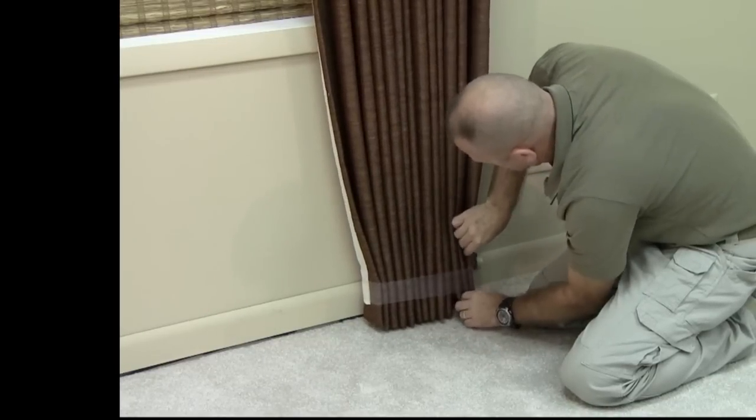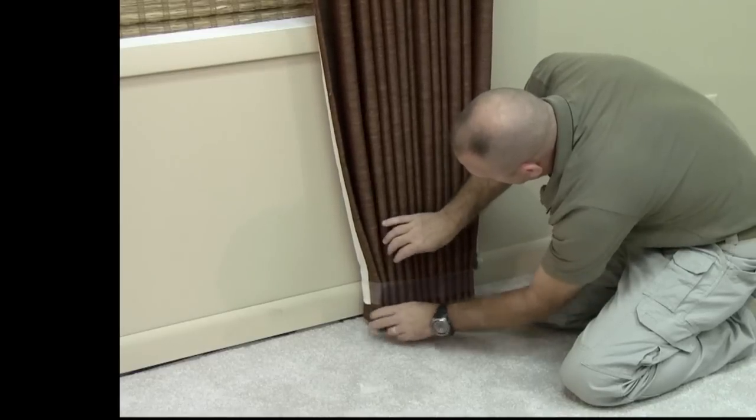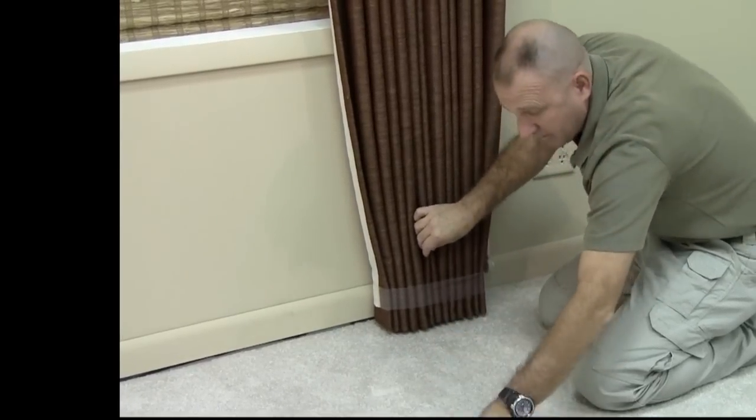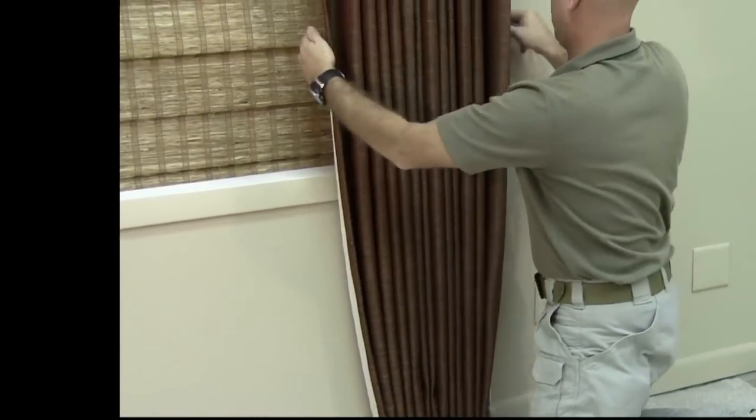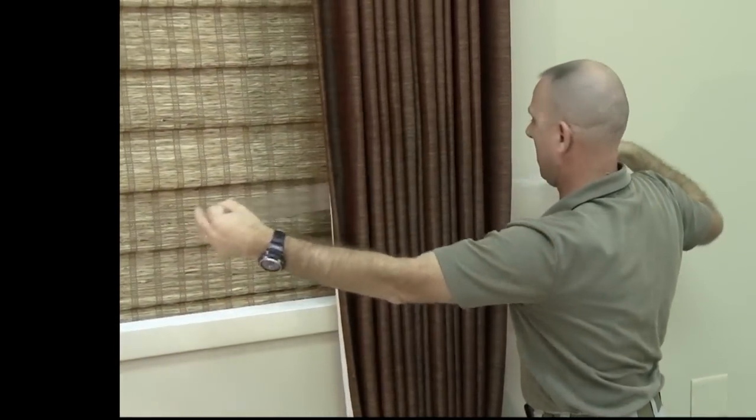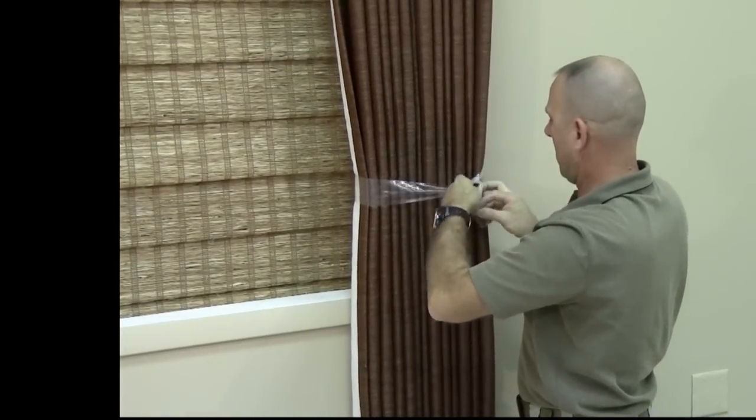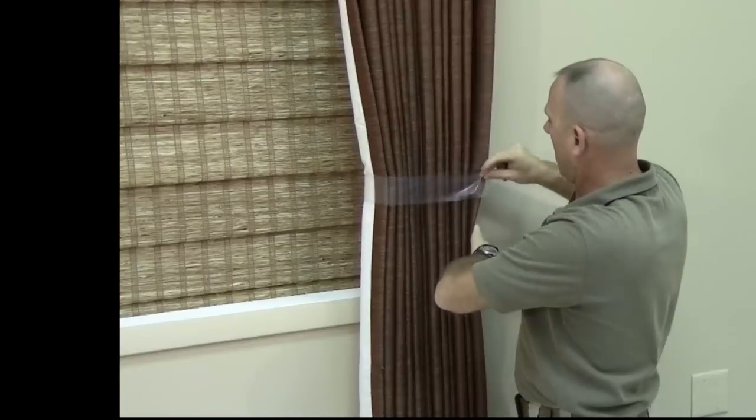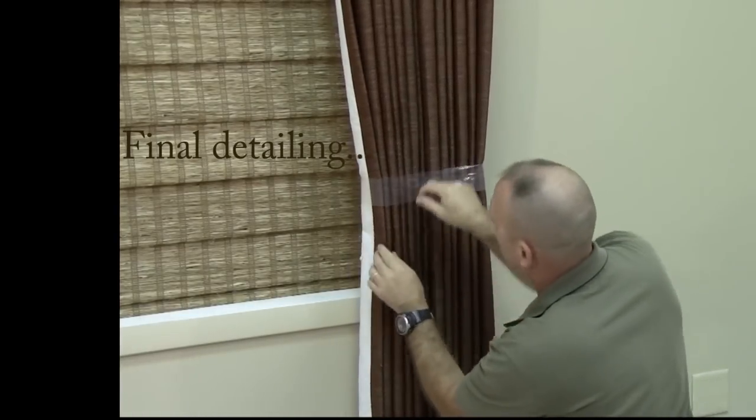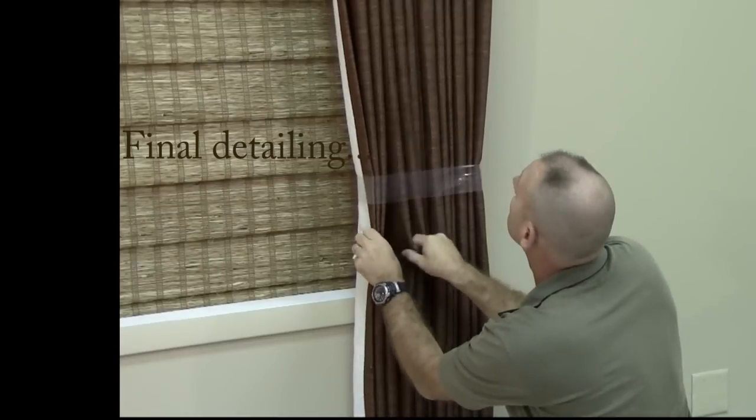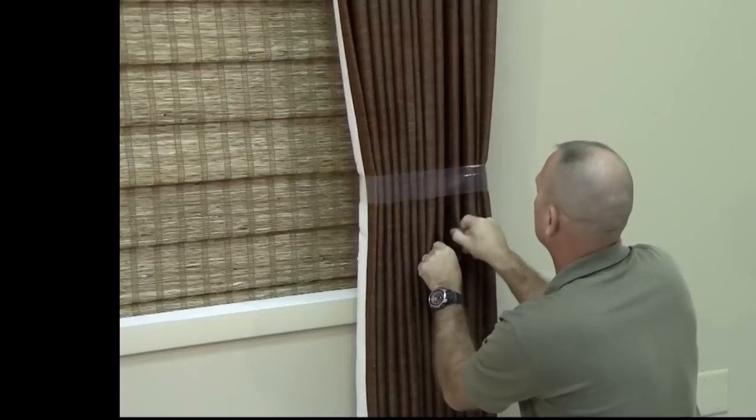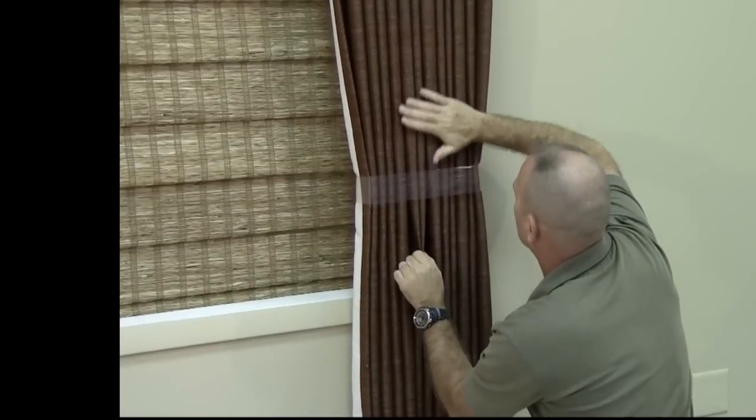As you are banding, take care to keep the folds equal and level with each other. Position the bands at the bottom and middle of the panel. After both bands are secure, take some time to make sure each fold is equal in size and width.